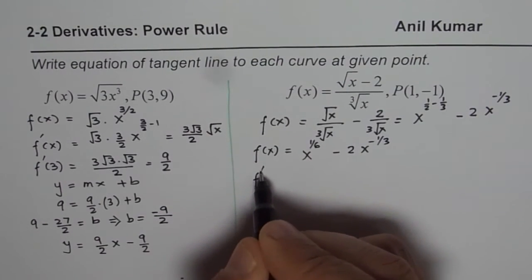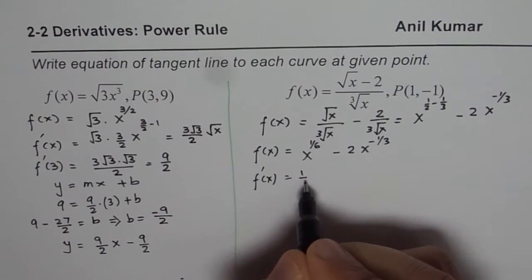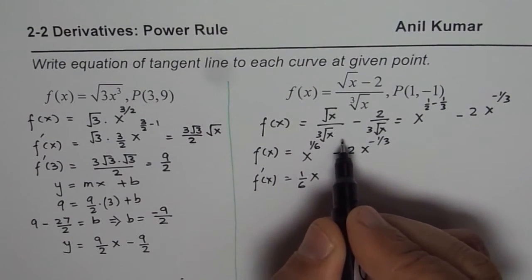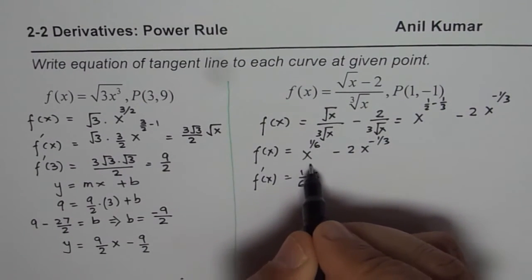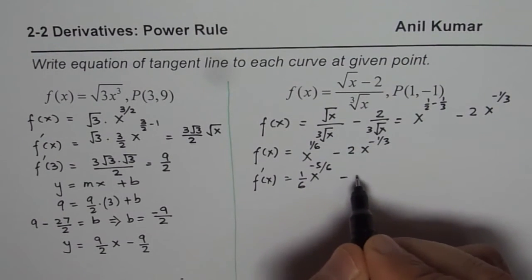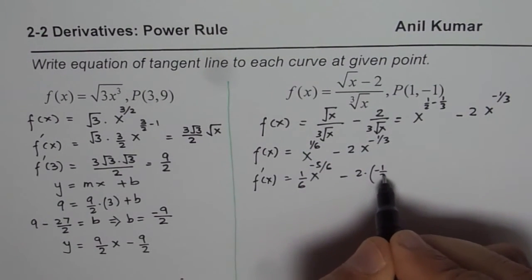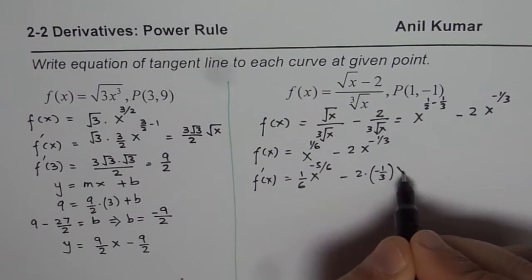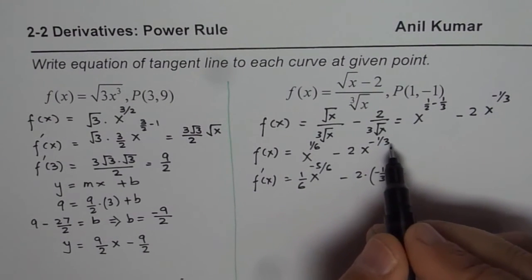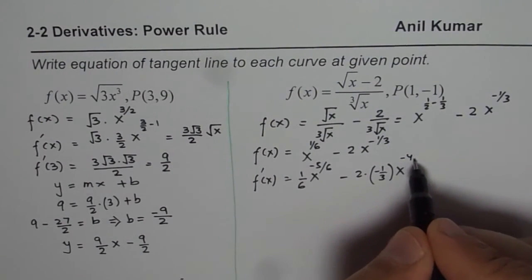So f(x) = x^(1/6) - 2x^(-1/3). Applying the power rule, f'(x) equals (1/6)x to the power of 1/6 - 1, which is -5/6, minus 2 times (-1/3) x to the power of -1/3 - 1, which is -4/3. So f'(x) = (1/6)x^(-5/6) + (2/3)x^(-4/3).